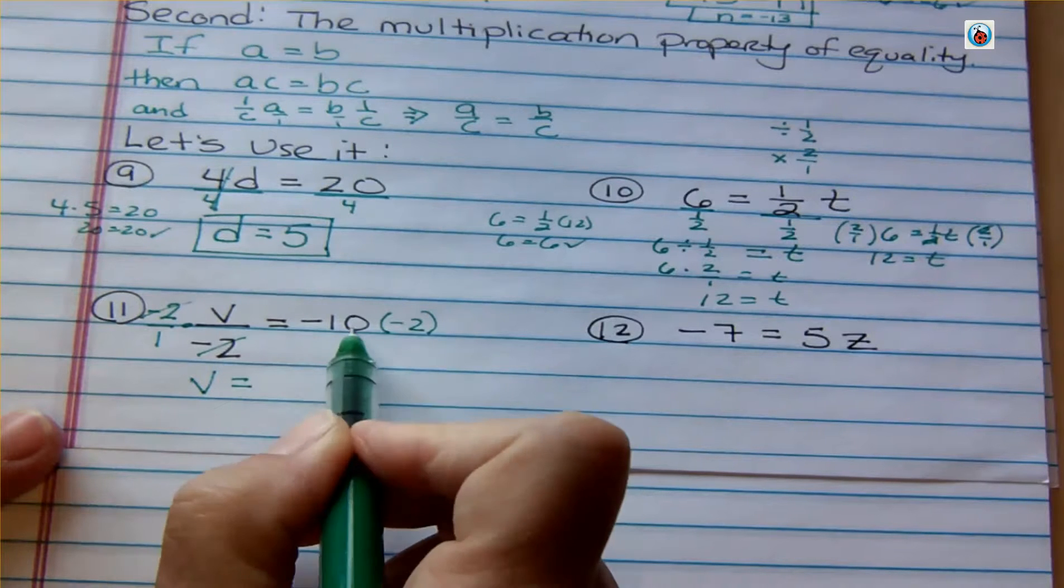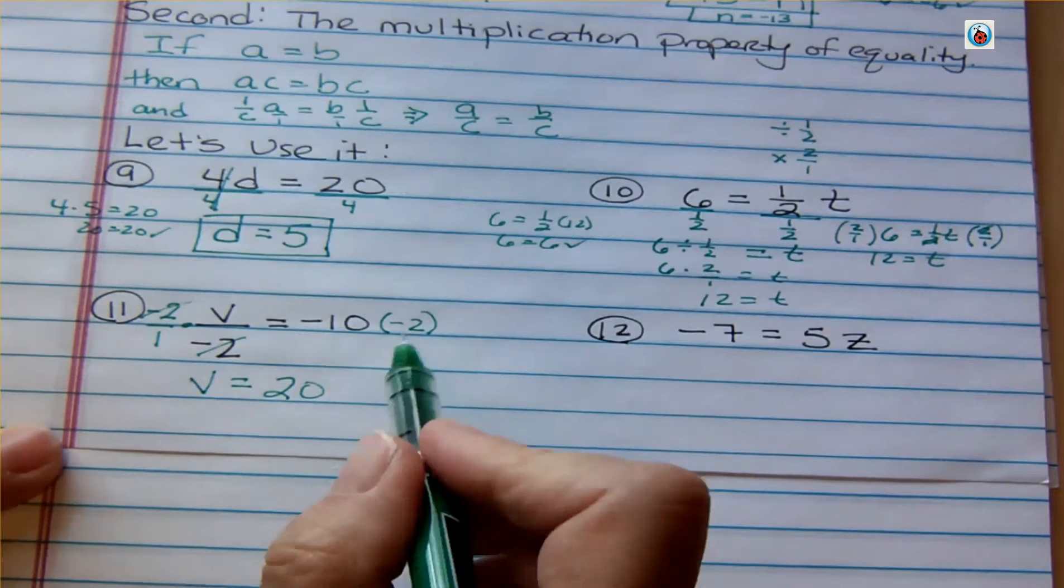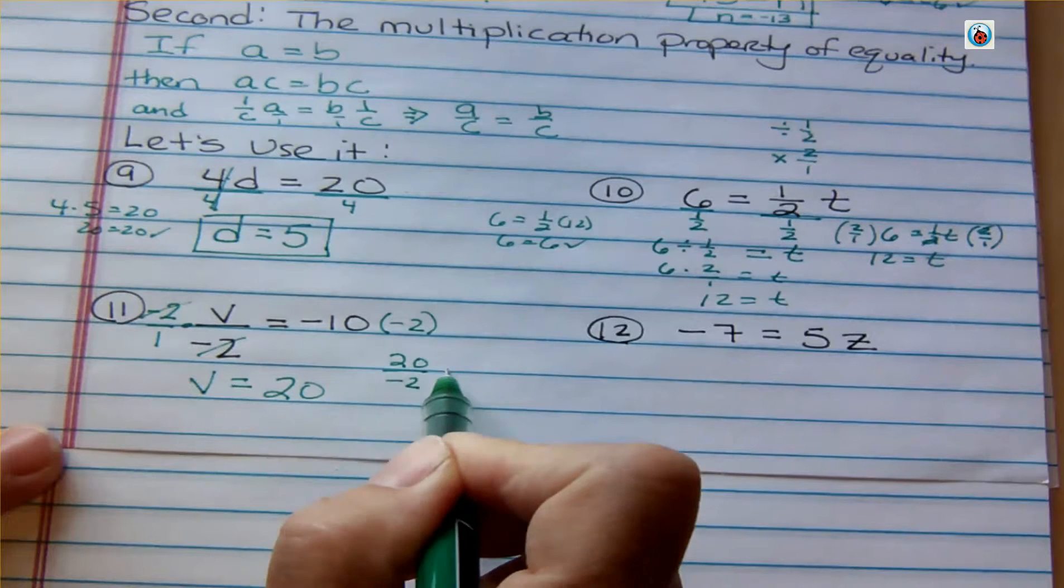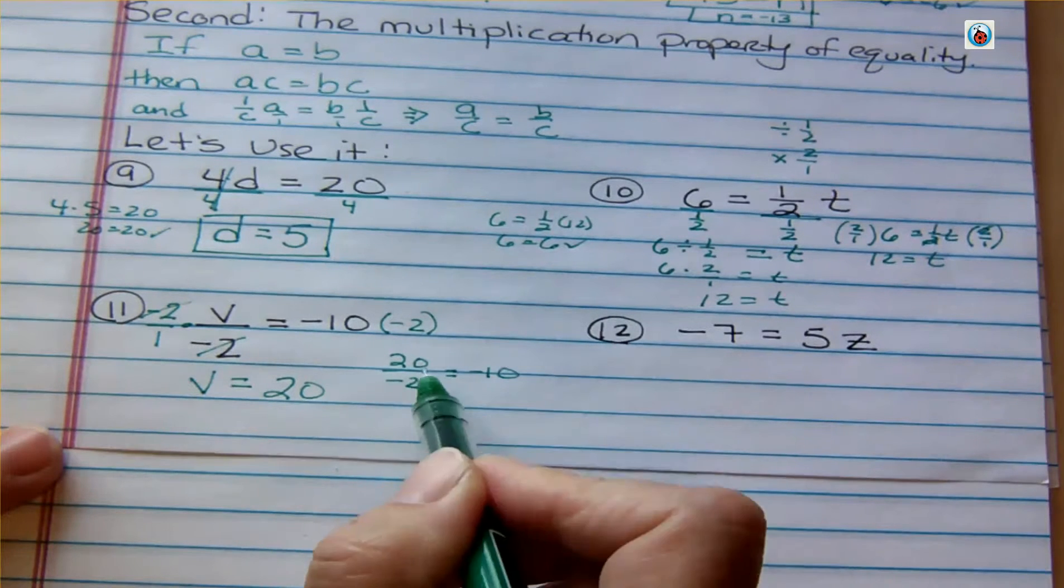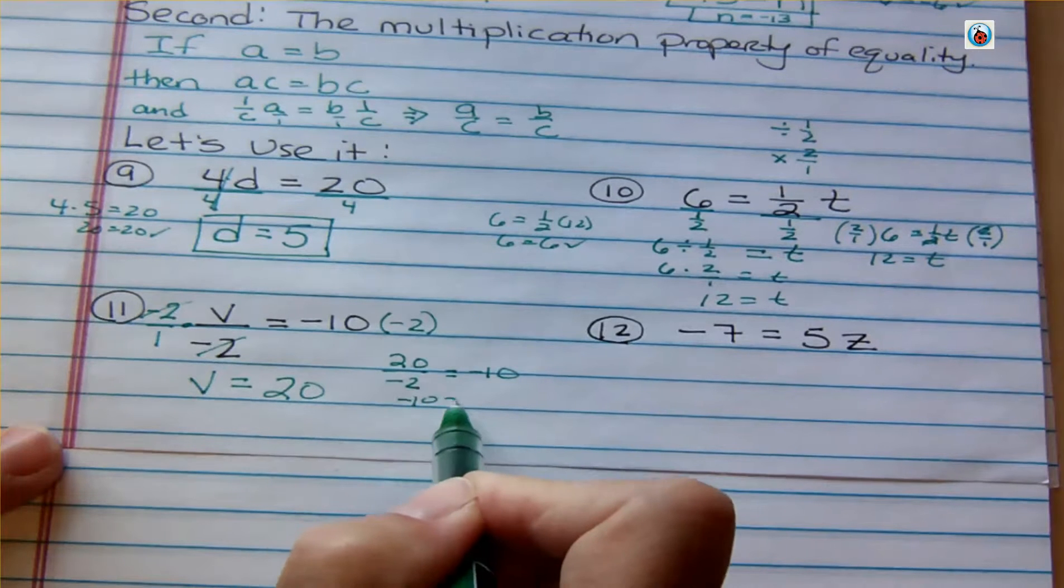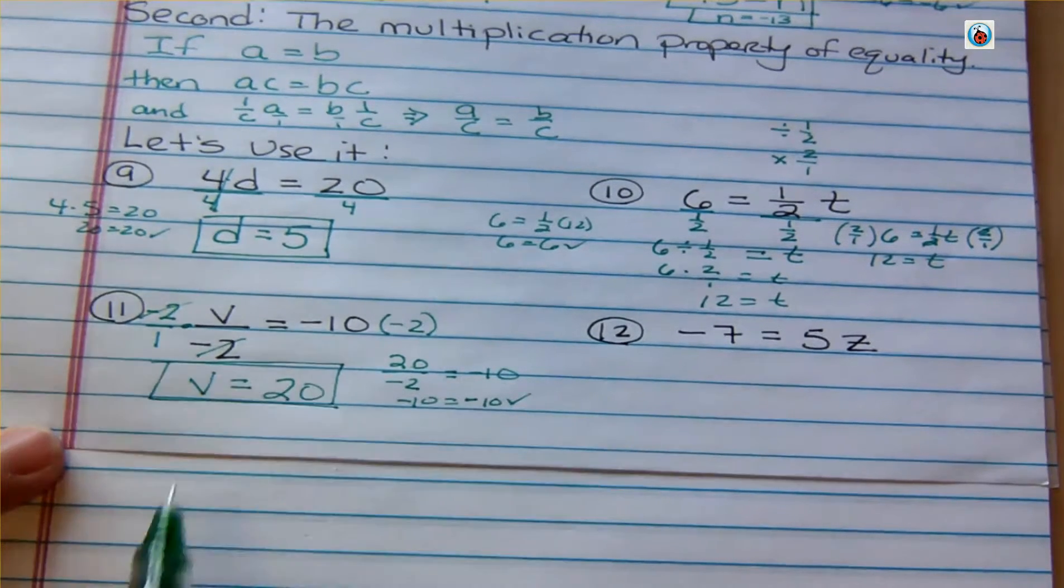And negative 10 times negative 2 is positive 20. So we can check that. If positive 20 divided by negative 2 is really negative 10. Well, a positive divided by a negative is negative 10. And so negative 10 equals negative 10, true, and V equals 20.